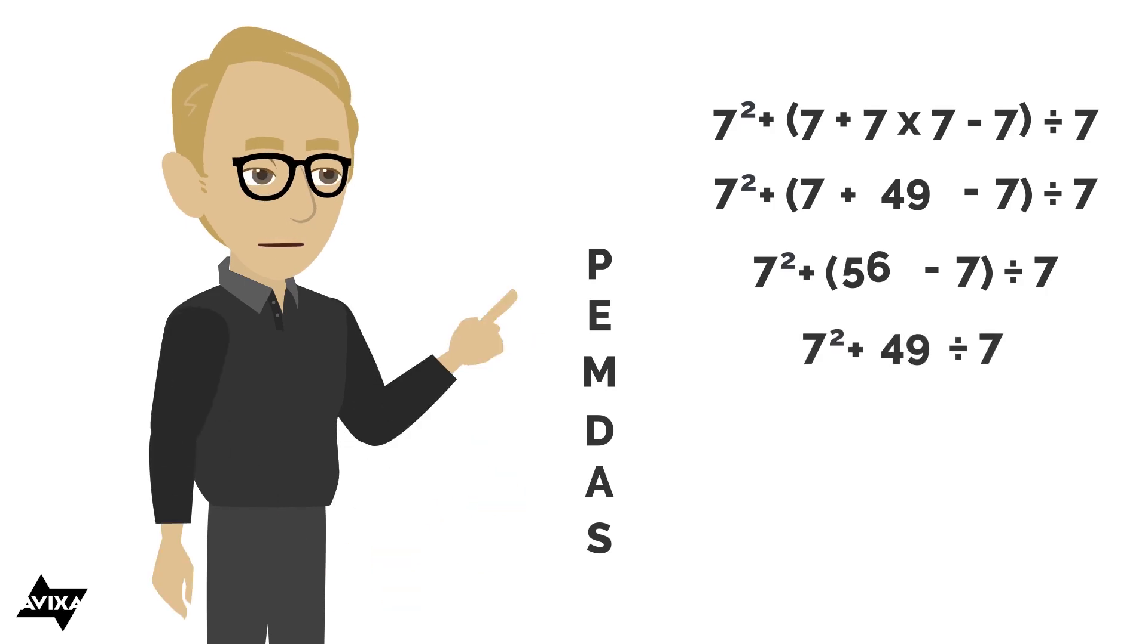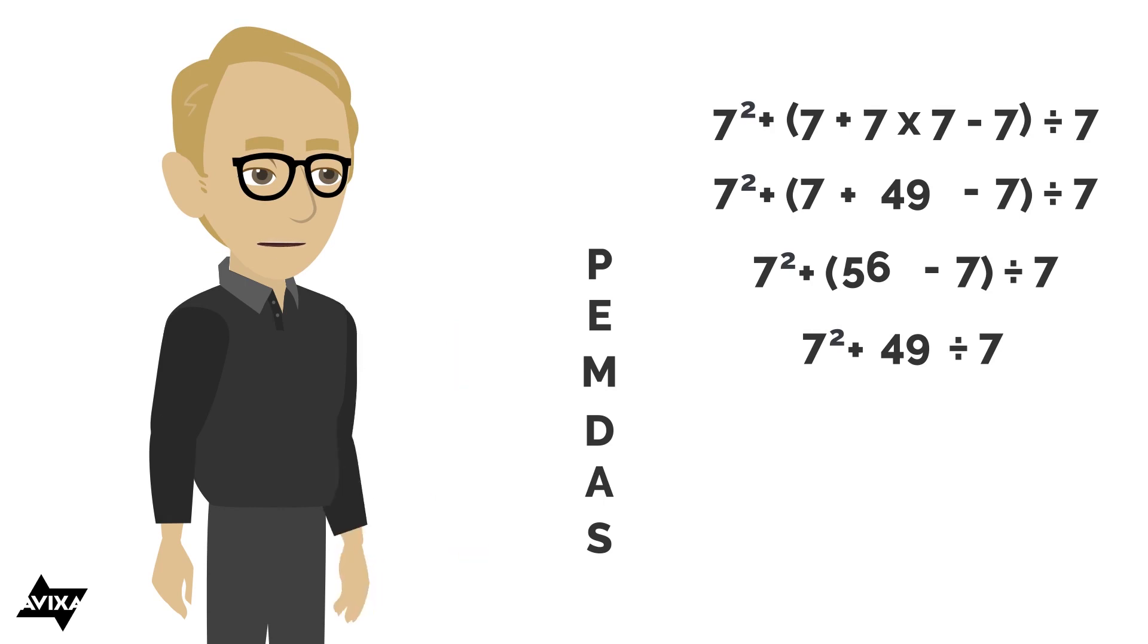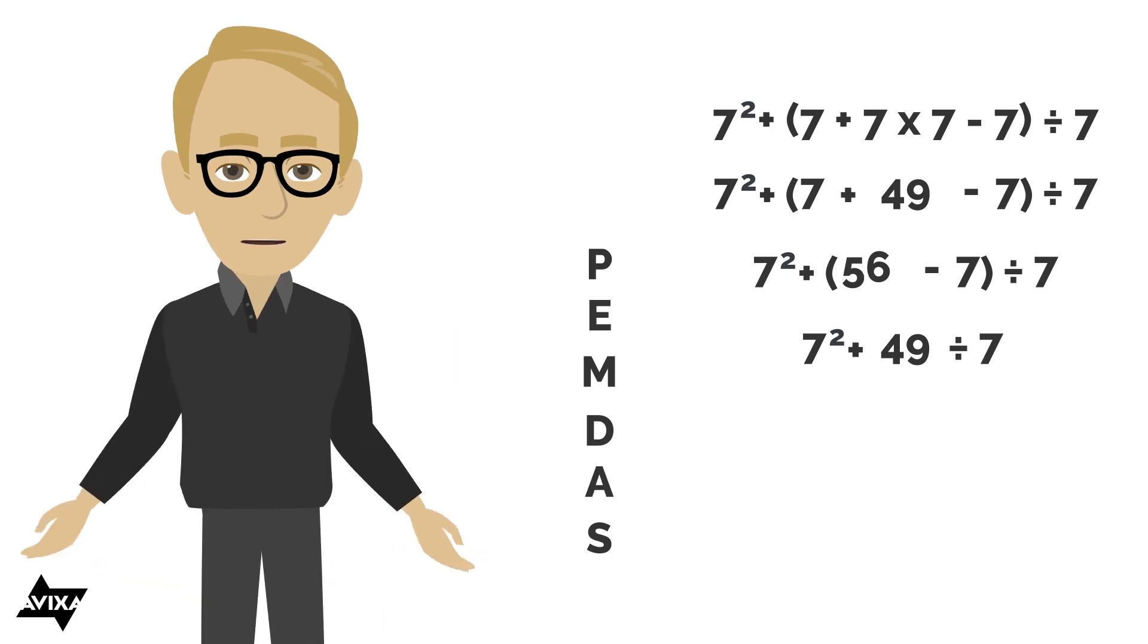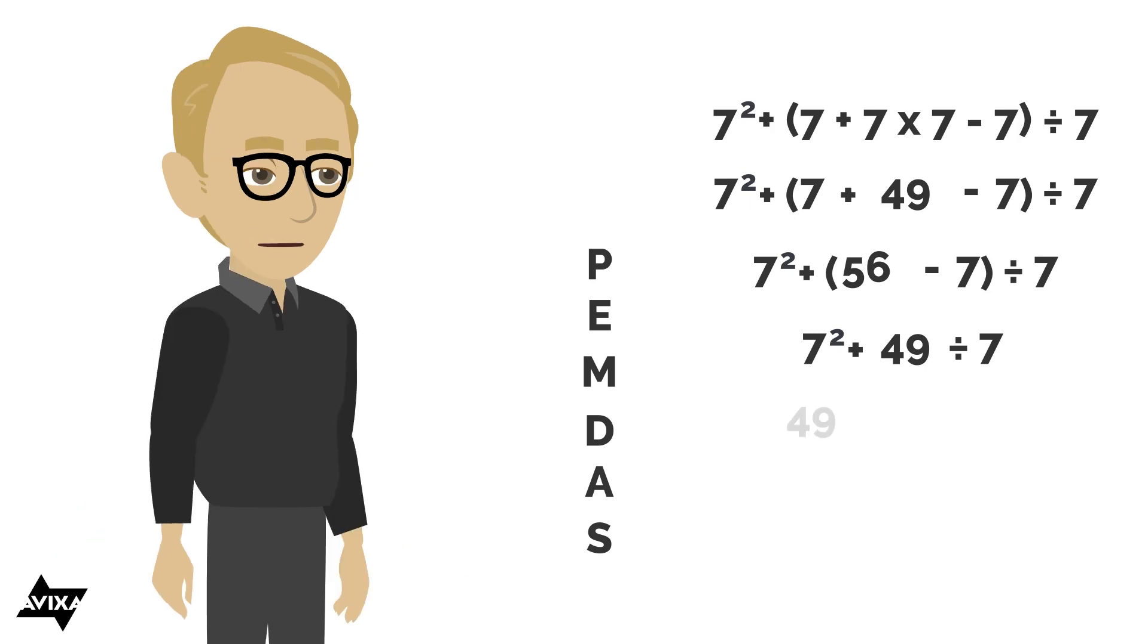so seven squared plus 49 divided by seven. I still have multiple operations. Which one do I do? I'm going to do the square. So seven times seven, seven squared, is going to be 49, plus 49 divided by seven.